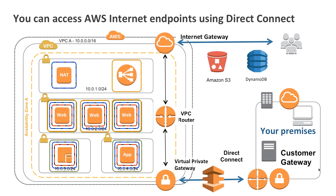If you use Direct Connect, we will also take Amazon's internet IP range and use BGP to push that back down to your routers, so that if your internal services and premises want to utilise an Amazon internet endpoint like S3, it can happen privately across that Direct Connect link without saturating your own internet bandwidth. So you have many options for creating hybrid environments, connecting back to your own premises and to the internet — and you're fully in control at all times.